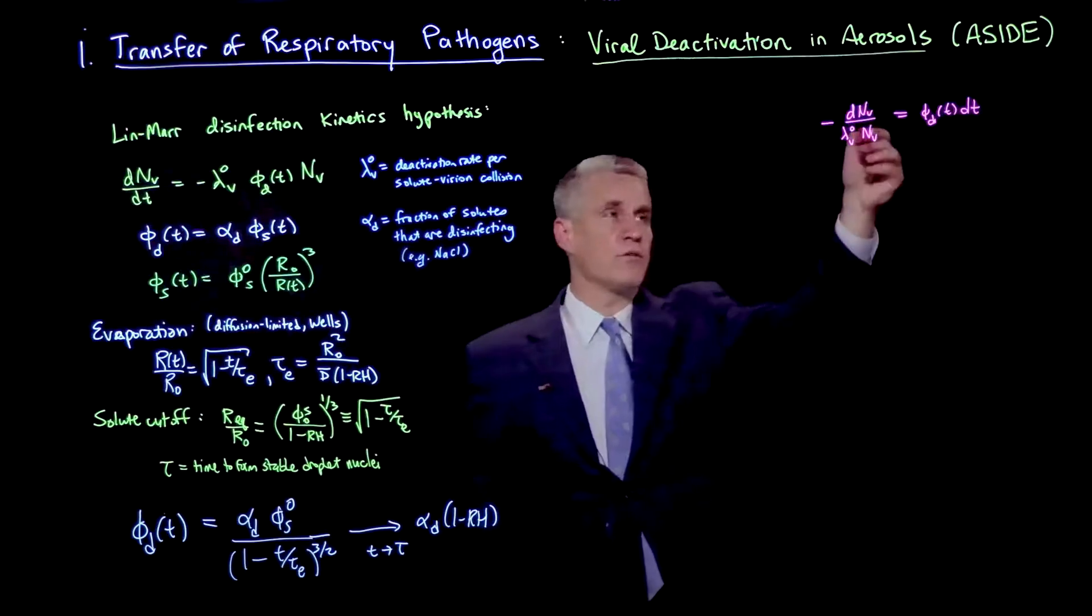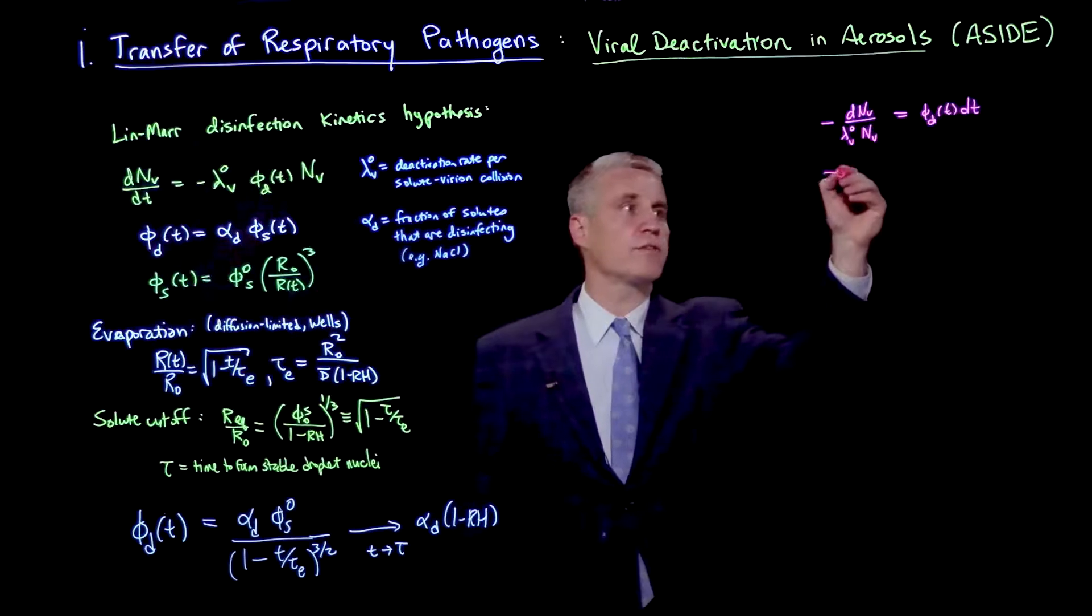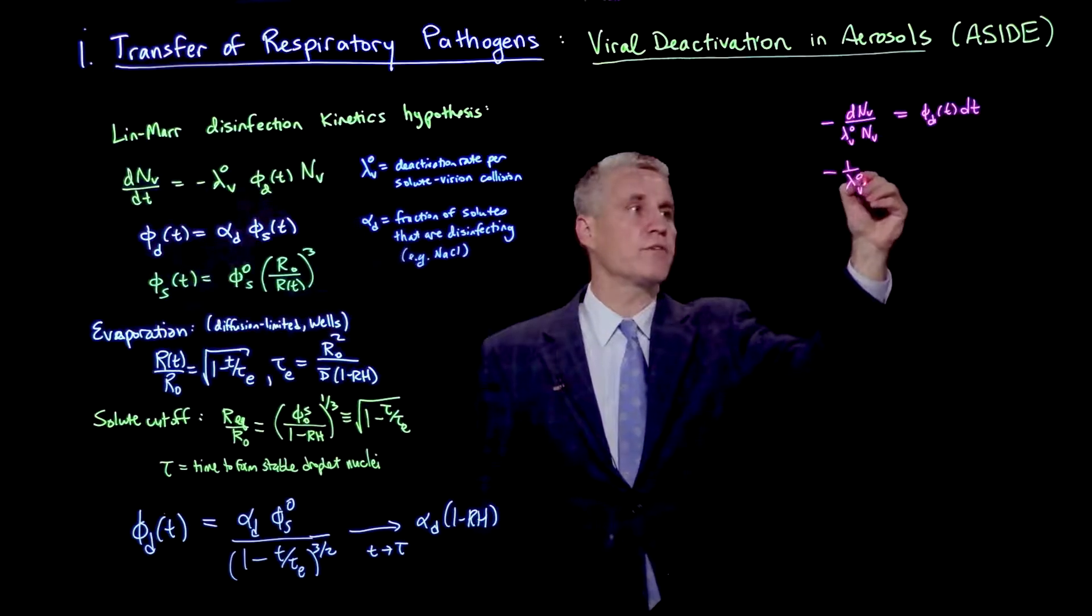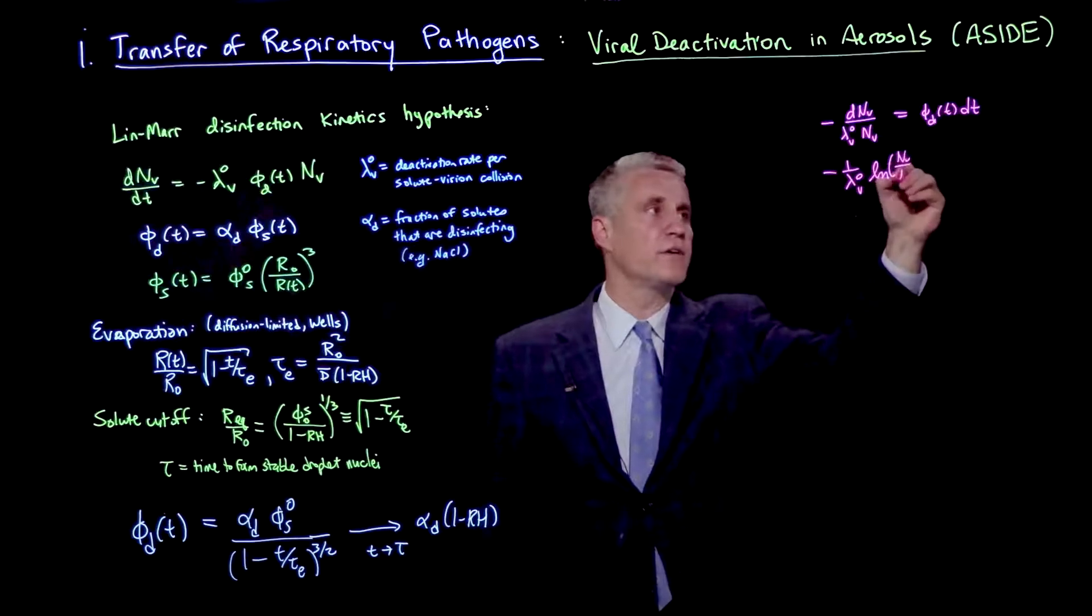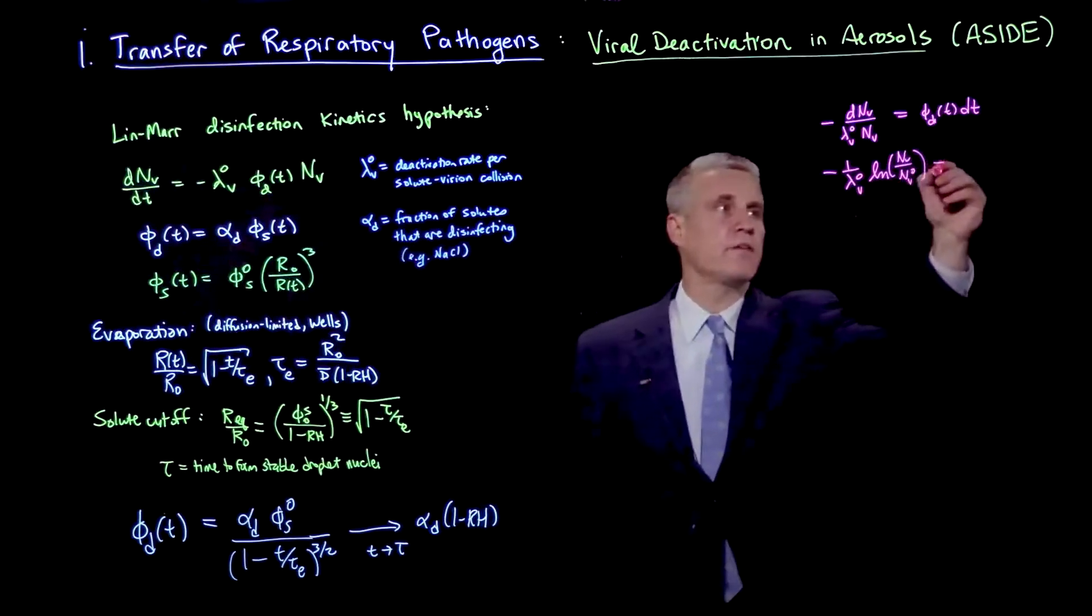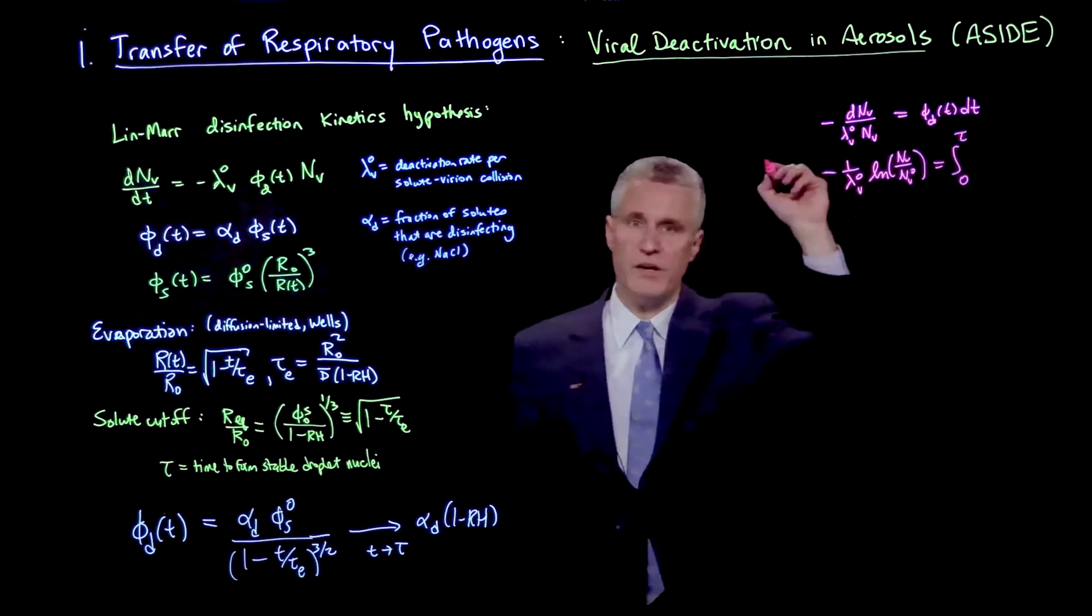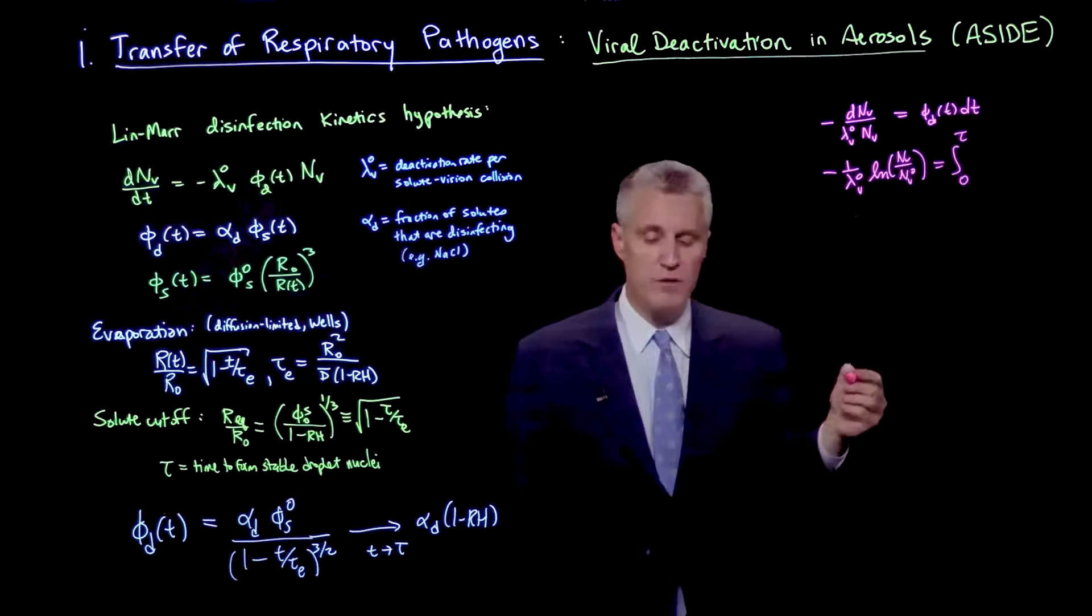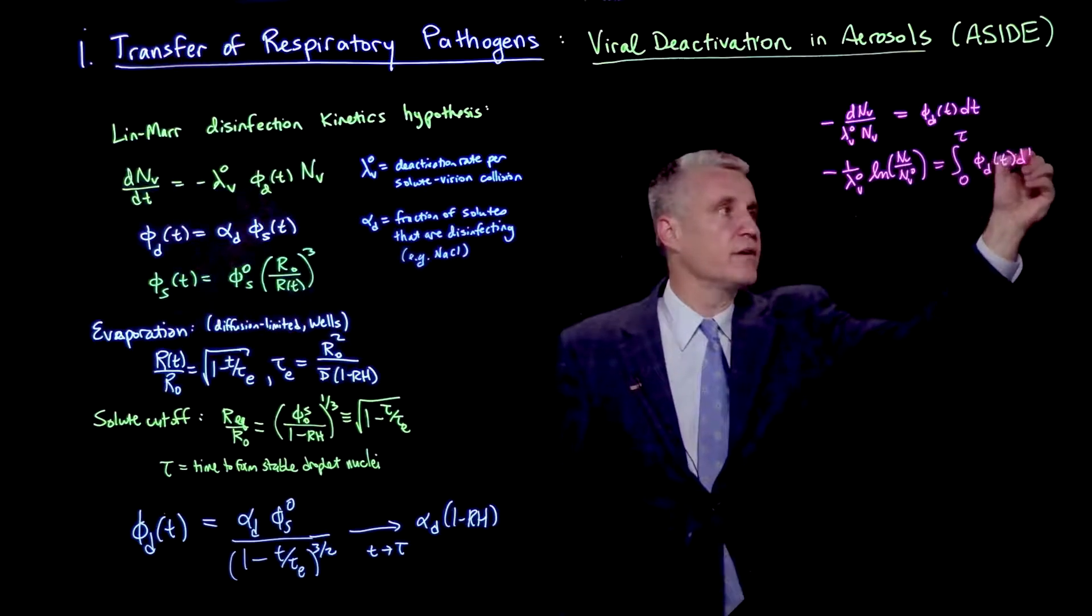The integral of dN over n is the natural log of n. We can write this as minus 1 over lambda v0, natural log of nv over nv0, which is the initial value of nv. In time, we're integrating from the initial time 0 up to the droplet nucleus time tau of phi d of t dt.